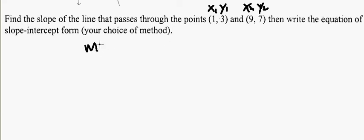So slope is equal to 7 minus 3 over 9 minus 1, which is 4 over 8, which is a half.